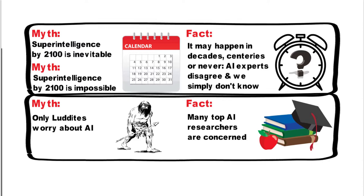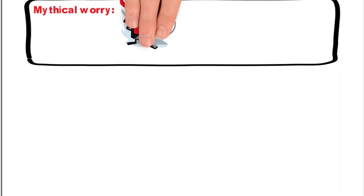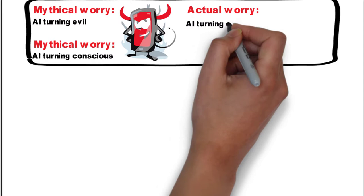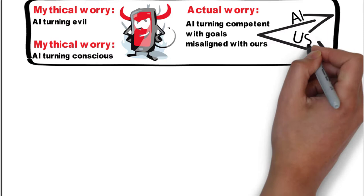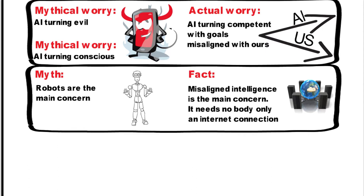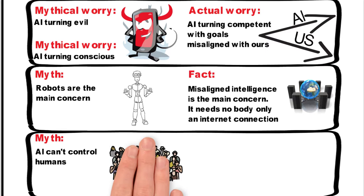And the fact is that many top AI researchers are still concerned about artificial intelligence and what's happening. The next thing he talks about is the mythical worry of will AI turn evil and will AI turn conscious? And the actual worry is AI being competent with goals that are misaligned with ours. So it's not necessarily consciousness that's the issue.